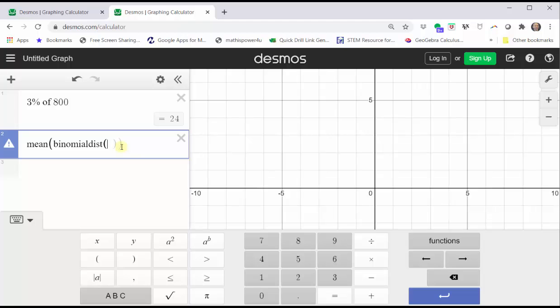Now, we enter the number of trials, which is 800, comma, the probability of the genetic mutation, which is 3% as a decimal, which is 0.03, which, notice, also gives us 24.